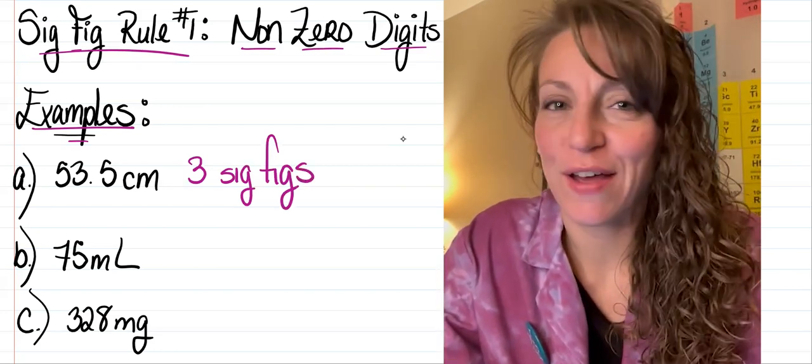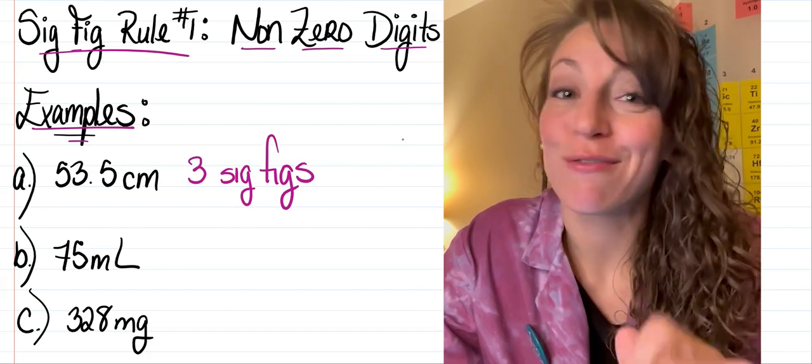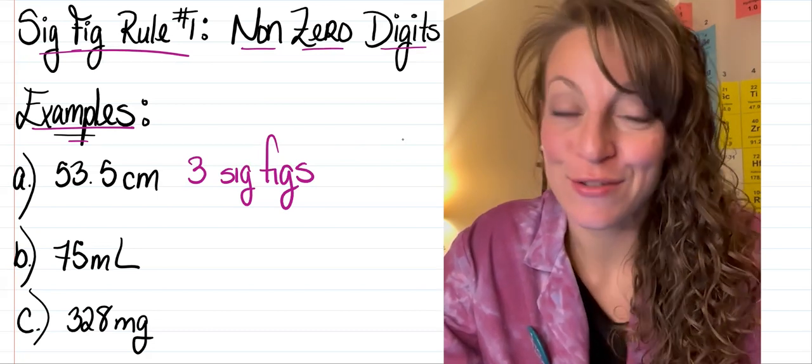In letter B, I have 75 milliliters. So I have a total of two significant figures with that measurement.